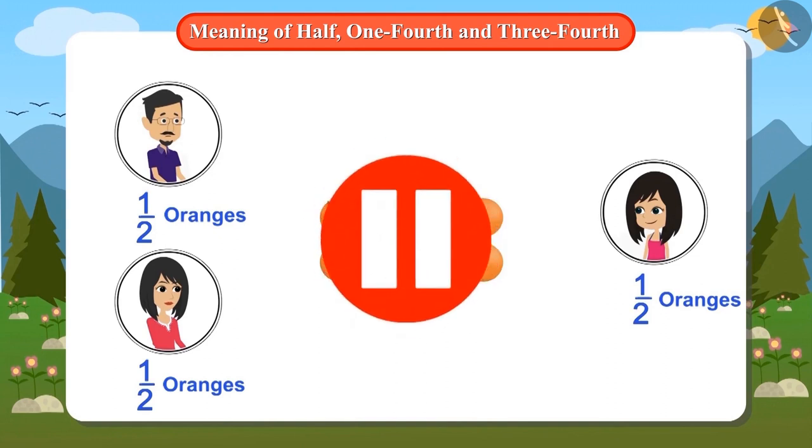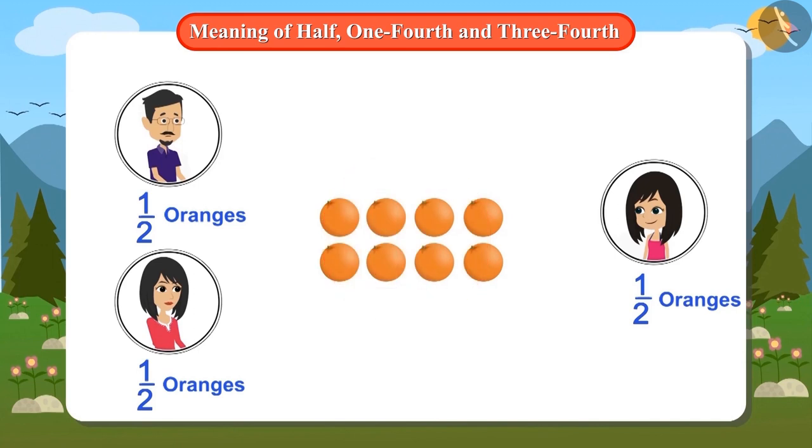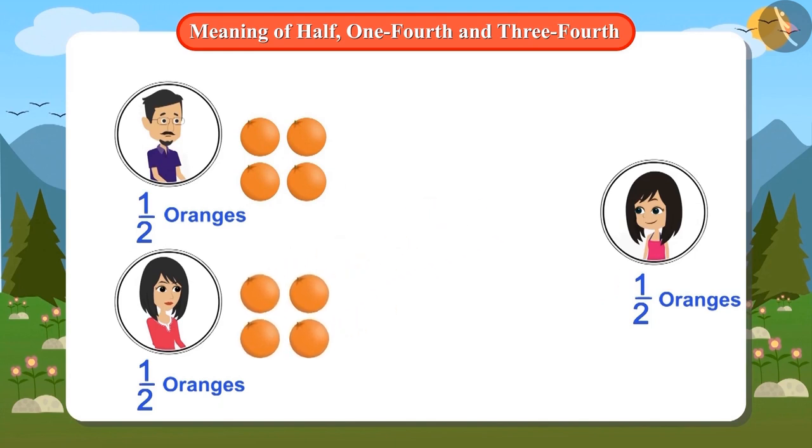Stop this video and think if the oranges can be divided in half by three people. We have a total of eight oranges. Four oranges is half of eight oranges. Let's give four oranges to papa and four oranges to mummy. But hey, what's this? There are no oranges left for Neha.